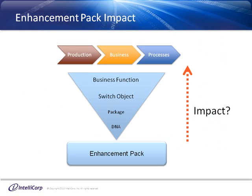Enhancement Packs put us in control of what functionality is activated and when. This is made possible by SAP's switch framework. New business process functionality is delivered in the form of business functions. Business functions connect with the SAP DNA that makes them work through switch objects and packages. So when we activate a business function, the question is: what else in the system is affected by the changes to our SAP system's DNA?